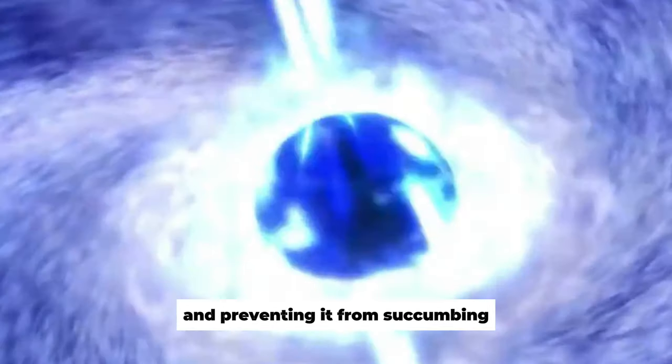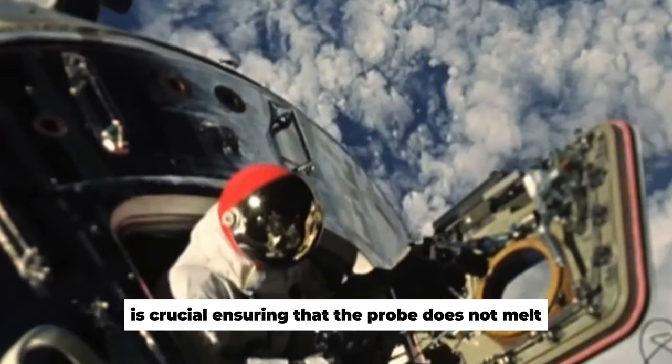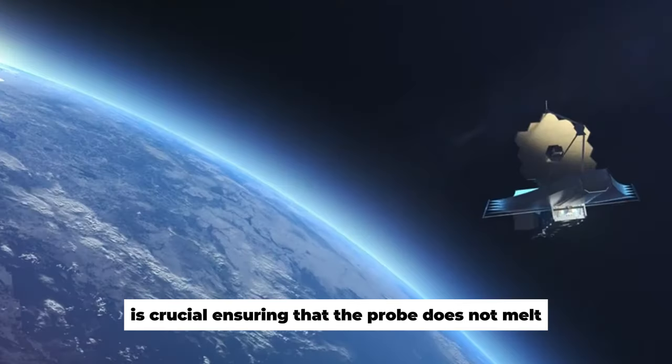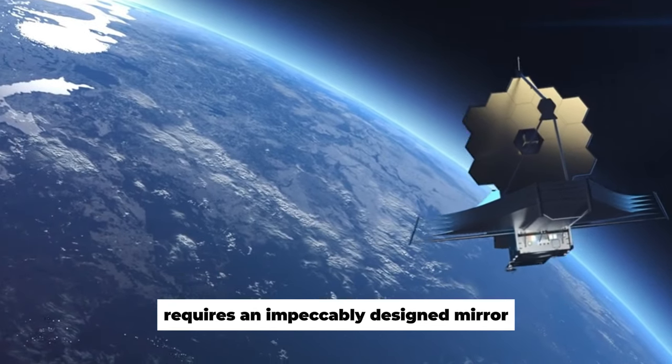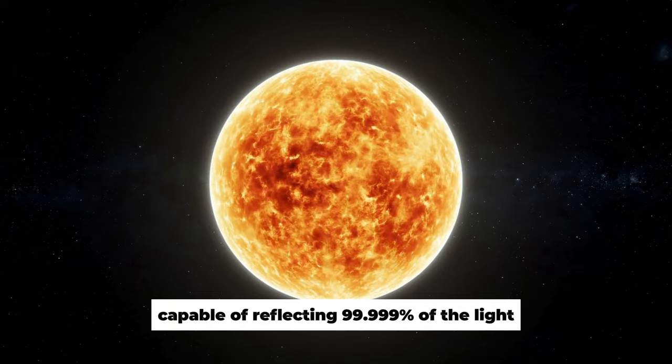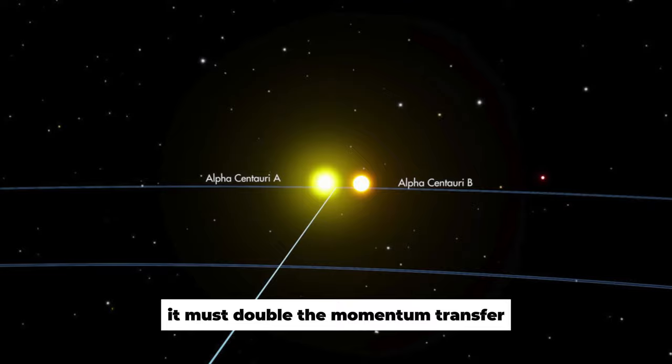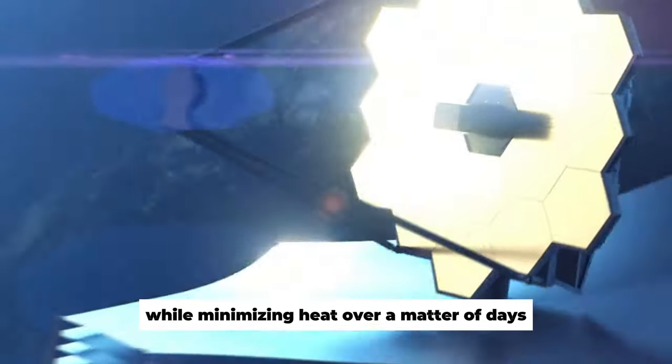Preserving the integrity of the probe and preventing it from succumbing to the harsh conditions of interstellar space is crucial. Ensuring that the probe does not melt requires an impeccably designed mirror, capable of reflecting 99.999% of the light it encounters. Additionally, it must double the momentum transfer while minimizing heat over a matter of days.